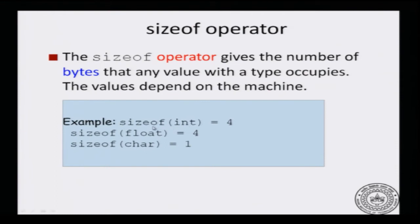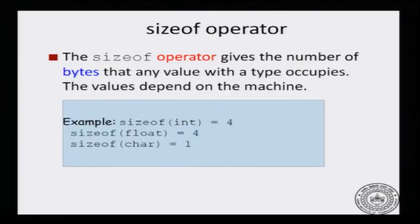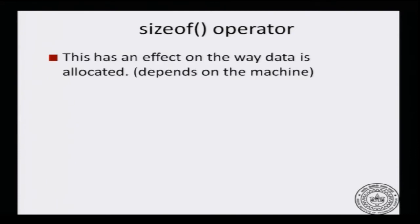The sizeof operator gives the number of bytes that any value with the given type occupies. It takes the name of a type as an argument. You could ask: what is the size of an int, a float, or a character? The answer will depend on the particular machine. The reason you use sizeof is that it helps you write code that is general enough for any machine.